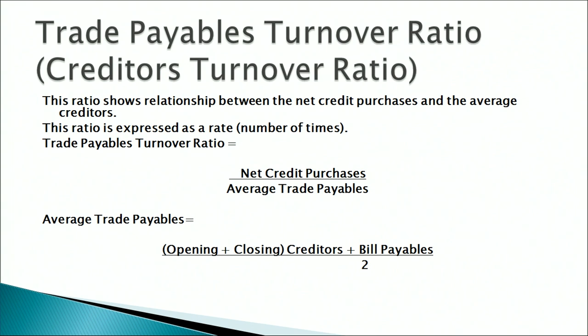Trade payables turnover ratio is also called the creditors turnover ratio. This ratio tells us how promptly we make payments to our creditors. Suppliers are always interested to know how and when the firm will make payments. The numerator is net credit purchases and the denominator is average trade payables. Net credit purchases equals total purchases minus cash purchases minus purchase returns. Average trade payables equals opening creditors plus closing creditors plus opening and closing bills payable, divided by 2.